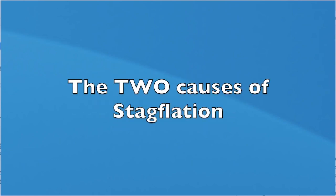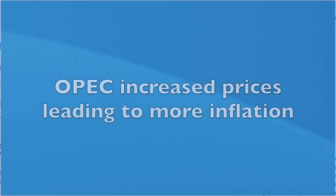Stagflation had at least two deep-rooted causes. First, President Johnson attempted to pay for both the Vietnam War and the Great Society without raising taxes, thus creating strong inflationary pressures. Second, the U.S. economy had become dangerously dependent upon inexpensive imported oil. The OPEC price increase played a significant role in driving up the costs of everything from gasoline to groceries in the 1970s, contributing to inflation.